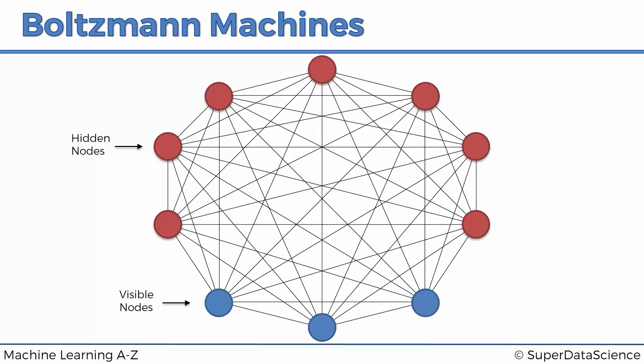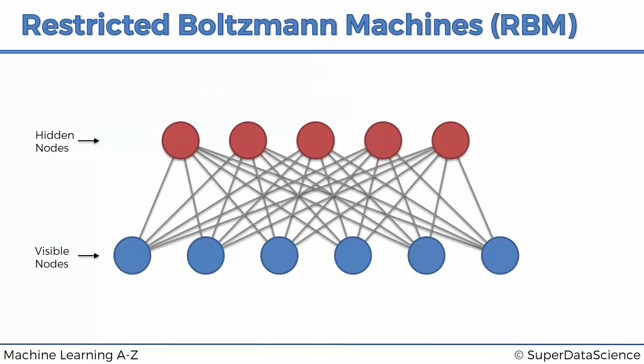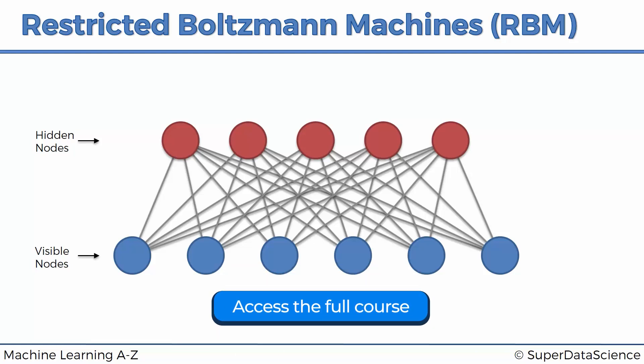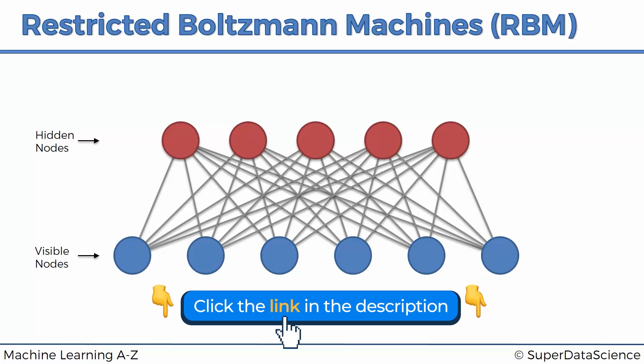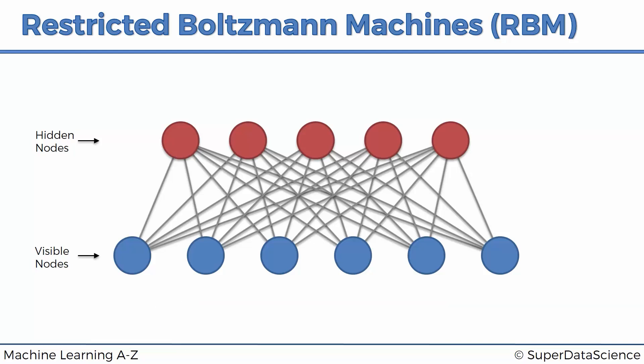A different type of architecture was proposed called the restricted Boltzmann machine. It has the same concept with the simple restriction that hidden nodes cannot connect to each other and visible nodes cannot connect to each other. Other than that everything's the same — we've got undirected connections happening in both ways, from visible nodes to hidden nodes and from hidden nodes to visible nodes. Now we're going to talk about how it works, how it's trained, and how it's applied in practice.